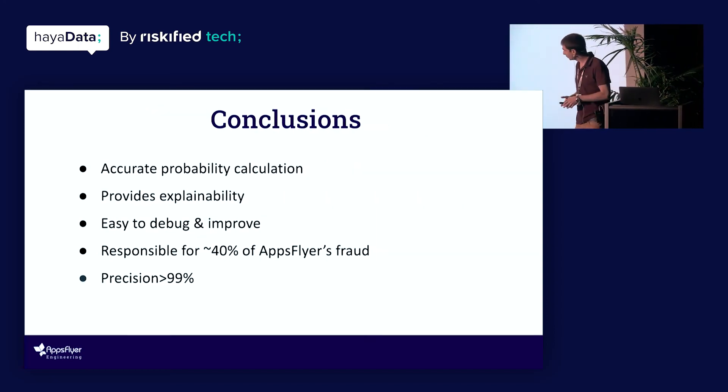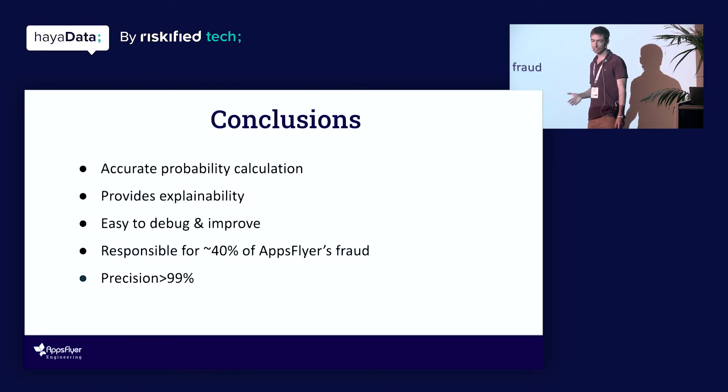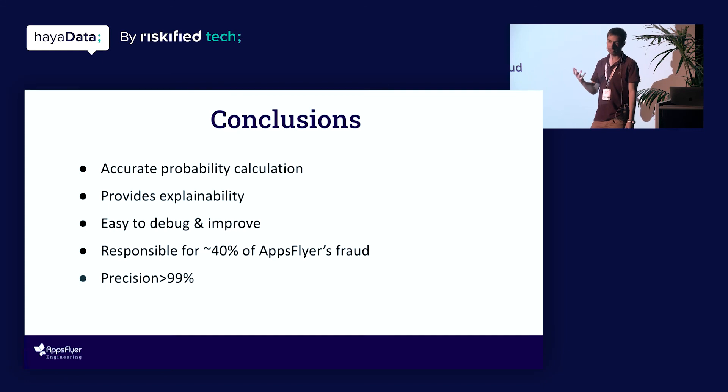So to conclude, using a Bayesian network, we were able to reach an accurate probability calculation that is computable in practice. We also got explainability as a nice bonus, and it's also something that's just like the explainability actually provides. It's easy to understand, to debug, to improve this, so it's something very easy to work with for us as data scientists along the development process, rather than a black box like a neural network. And in practice, in AppsFlyer, it's today responsible for about 40% of AppsFlyer's detected fraudulent installs, and precision that we have is over 99%, although most of our data is not fraud, actually. A data set is unbalanced, and yet we manage that when we say something is fraud, we have to be right. It's important for our business, and it's something that we only manage to do using a Bayesian network. So that's it. Thank you.